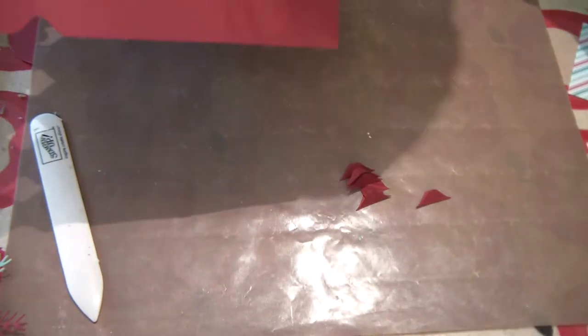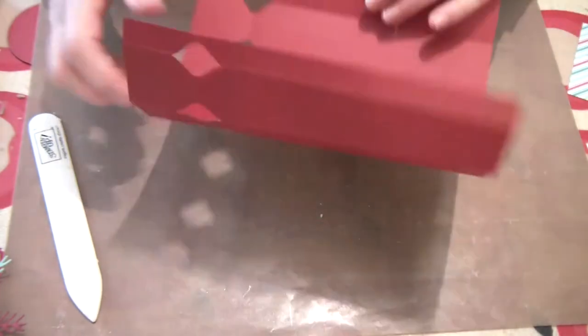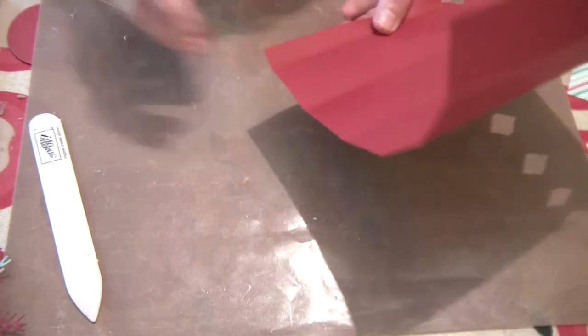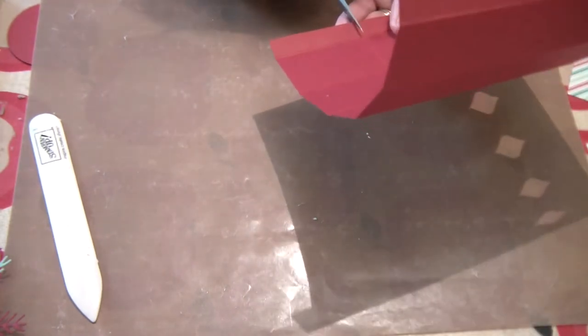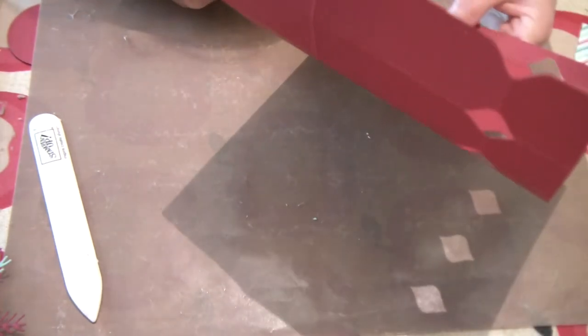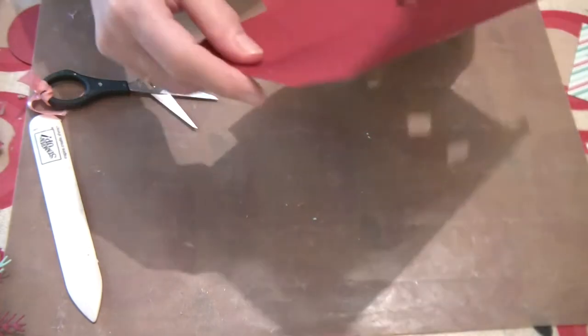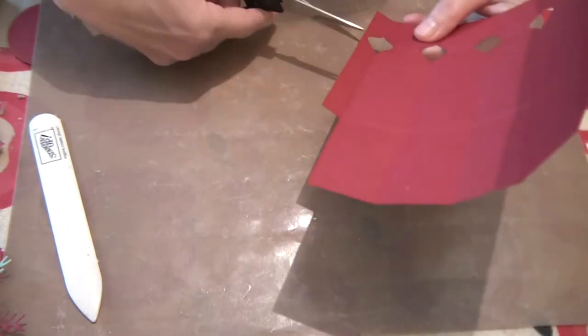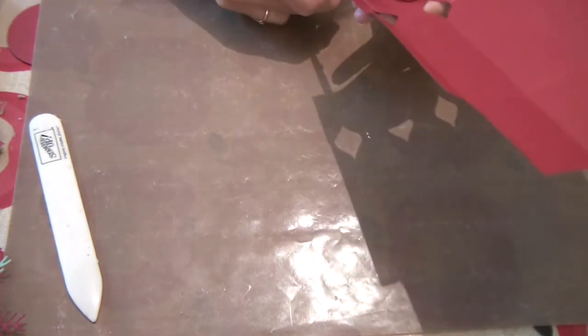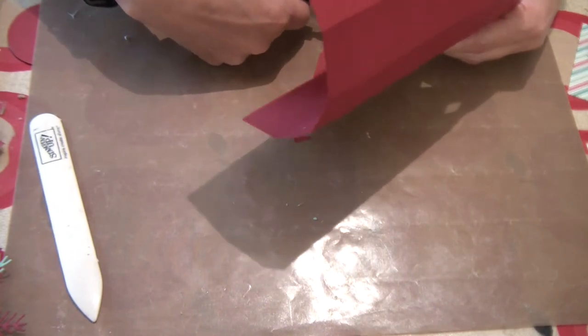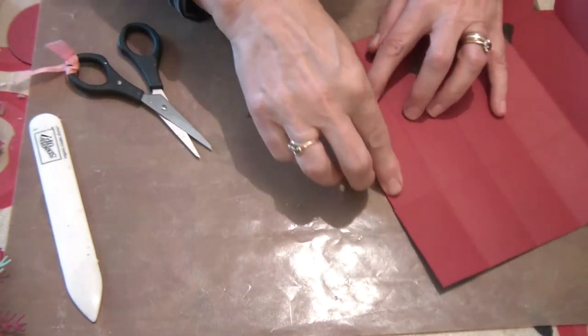So we've punched all the way along so if you can see the line it's in the middle of the line we've punched. Okay so remove my envelope punch board because we don't need that no more. Now this section here we don't need so we're going to cut this away. So we're going to cut that away as well. Then you've got a nice little tab there.